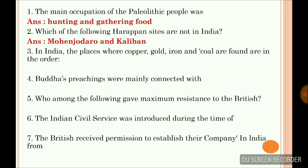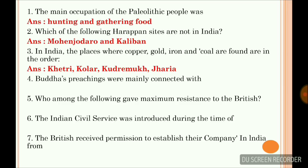In which places are copper, gold, iron, and coal found, in that order? They are Khetri, Kolar, Kudremukh, and Charya. These are the places where these metals are found.